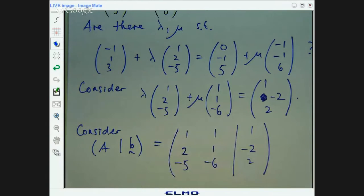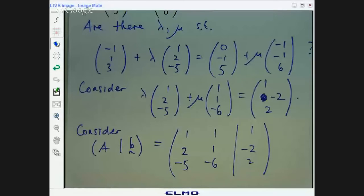We can put it into a row echelon form and then make some conclusions about the original question. Let's do some row operations and reduce it to a row echelon form. The first thing we do, of course, is we choose a pivot entry.